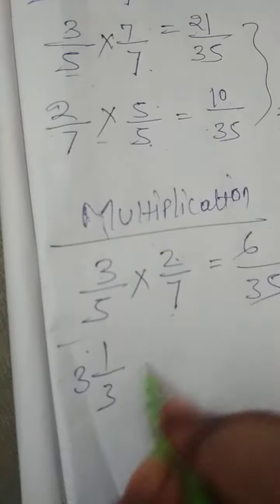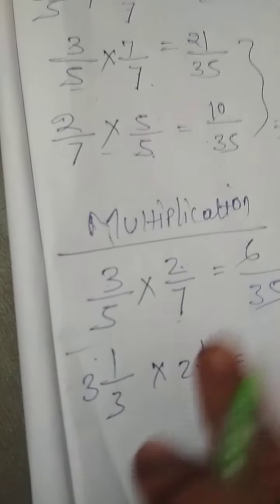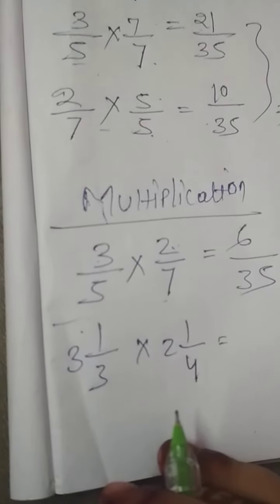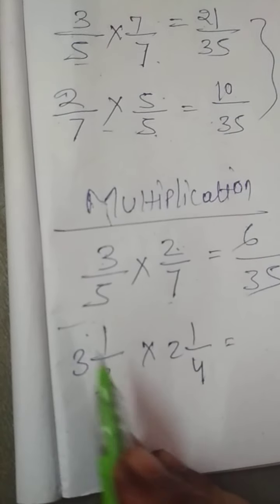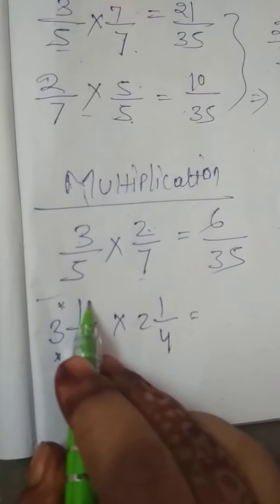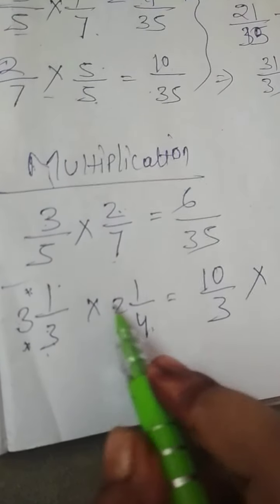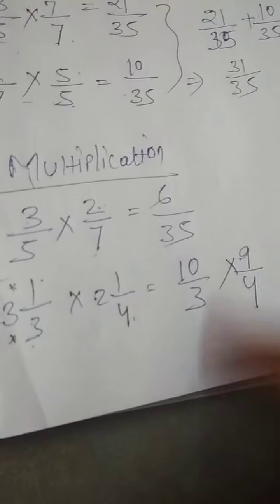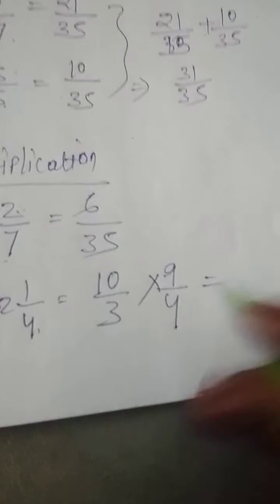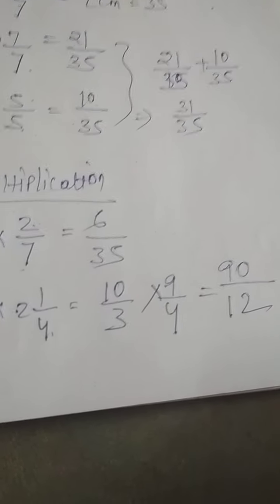If the question is given like this: 3 whole 1 by 3 into 2 whole 1 by 4 — if the question is given in mixed fraction, you have to first convert it into improper fraction, then multiply it. For 3 whole 1 by 3: 3 into 3 is 9, plus 1 is 10, so 10 by 3. For 2 whole 1 by 4: 4 into 2 is 8, plus 1 is 9, so 9 by 4. Then multiply: 10 into 9 is 90, and 3 into 4 is 12. Got it, friends? This is multiplication.